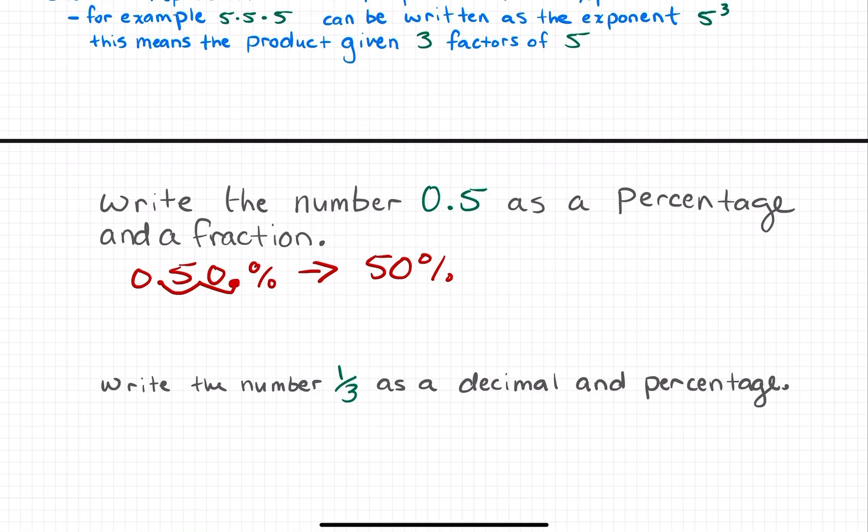To convert 0.5 to a fraction, I need to think about how many places after the decimal there are. I only have one place after the decimal, the tenths place. So I take that number to the right of the decimal and put it over 10. This is an equivalent fraction, but it's not fully simplified. You can factor out a 5 from both 5 and 10.